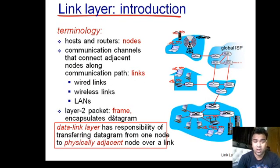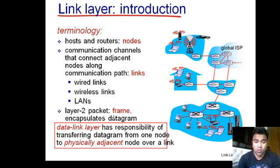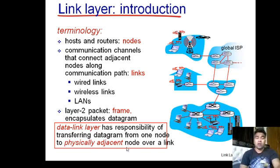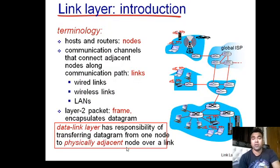When a packet comes from the Network Layer down to the Data Link Layer, the Data Link Layer adds a header as well as a trailer. The Data Link Layer is the only layer that provides a trailer. When the packet is encapsulated with both header and trailer, it becomes a frame. The Data Link Layer is responsible for transferring this frame from one node to the physically adjacent node over a link.